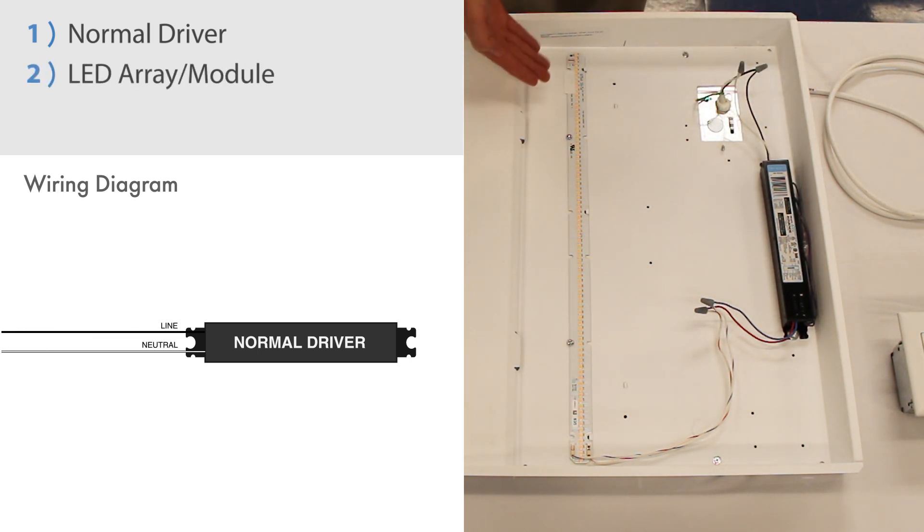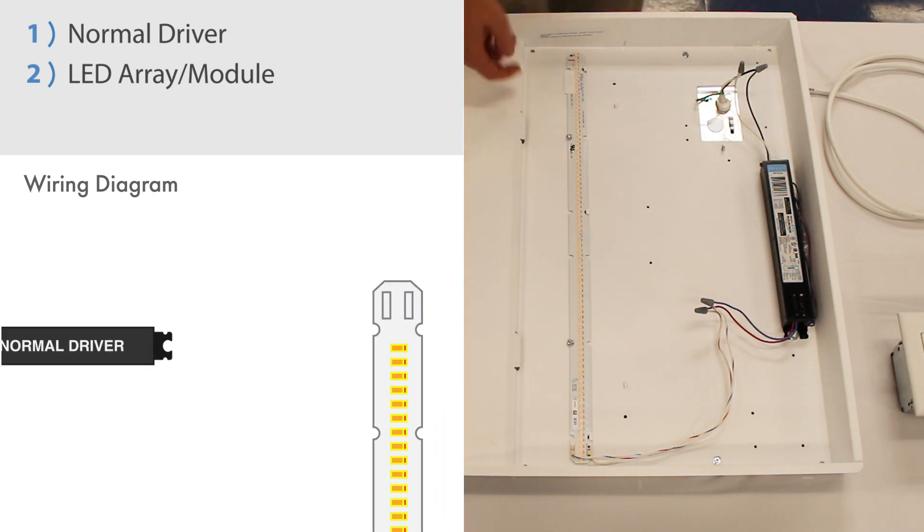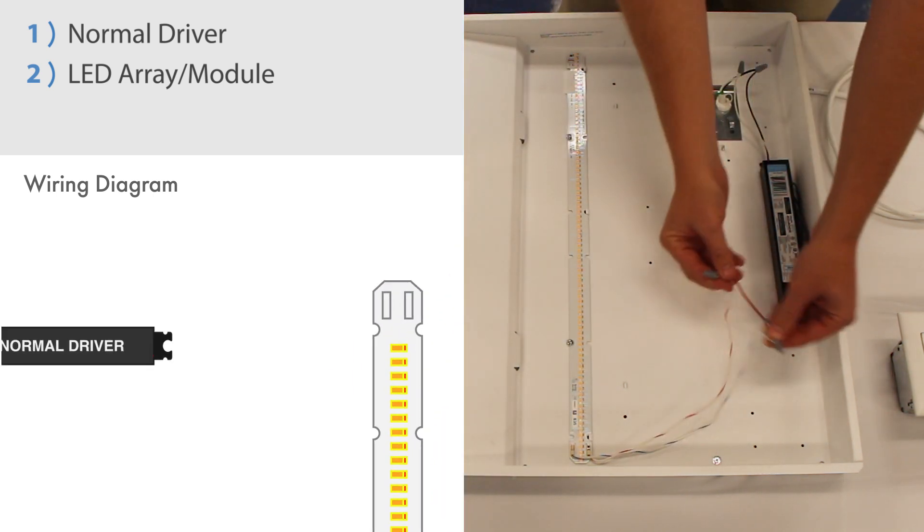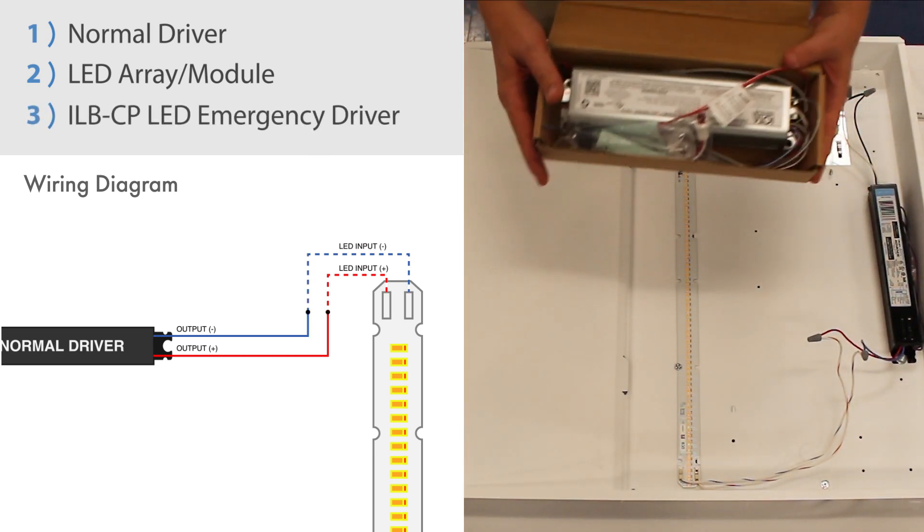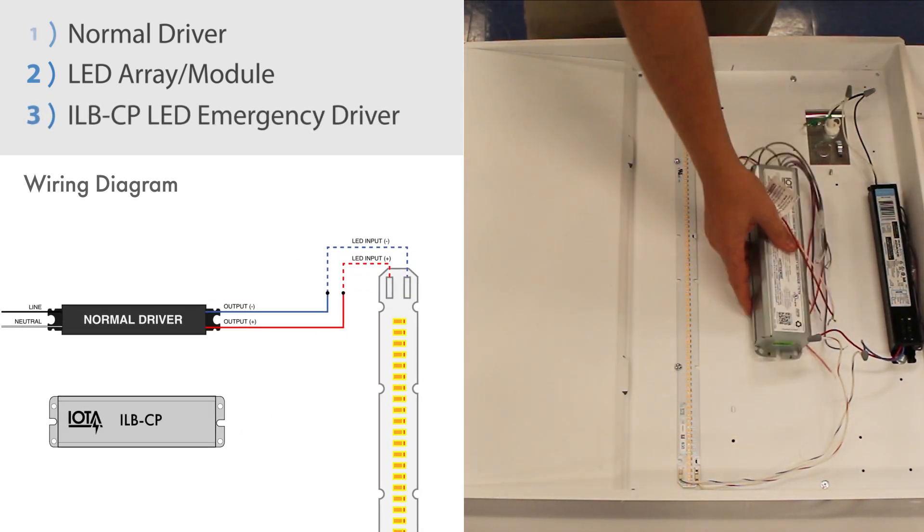Two, an LED array or module, which is powered by the normal driver through positive and negative leads. And three, your ILB-CP LED emergency driver.